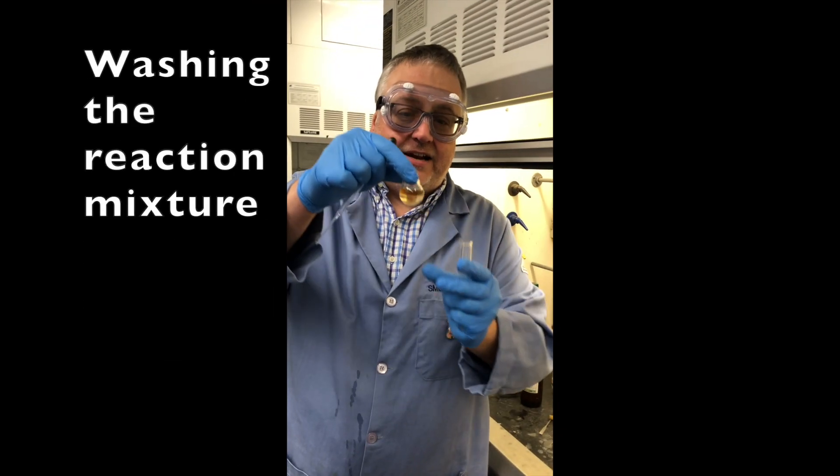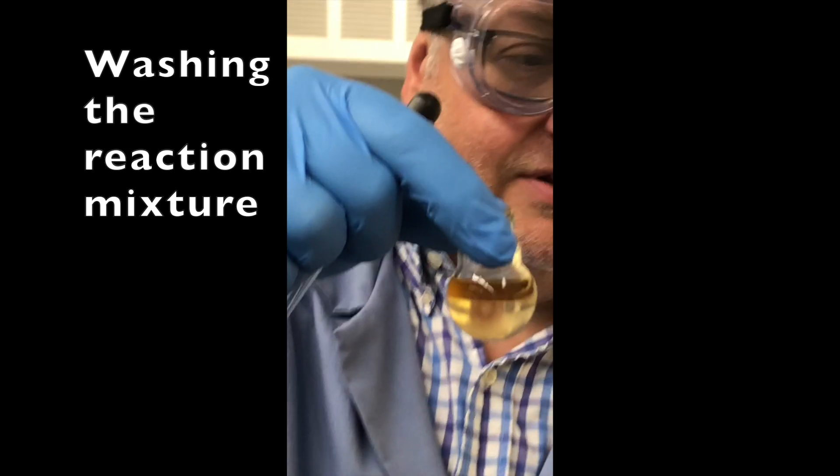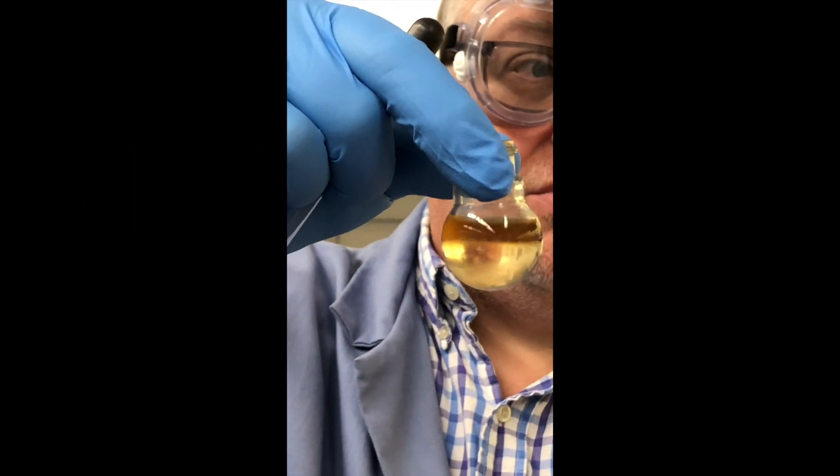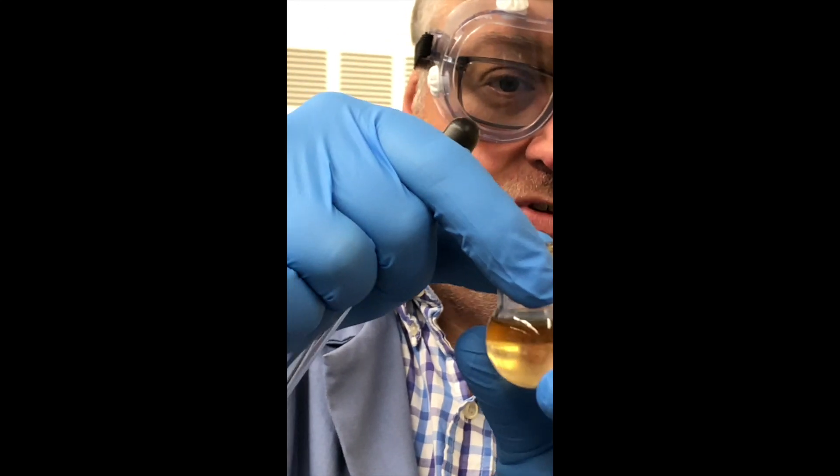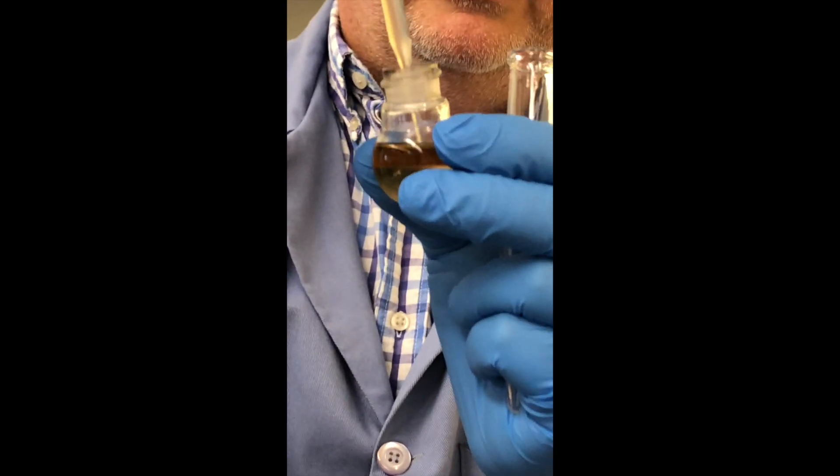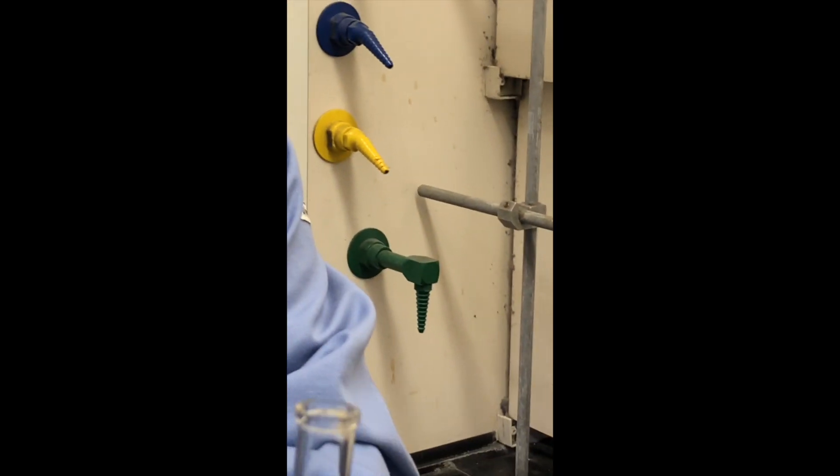We just added five milliliters of water to the final reaction mixture in the tube and it's formed these nice two layers. The upper layer is primarily product with any leftover alcohol and a little bit of acetic acid. So now we're going to transfer this to a centrifuge tube very carefully.